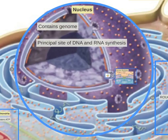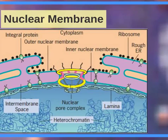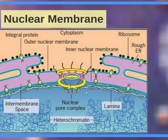The nucleus will have its own lectures associated with it, but right now it contains the genome and is the principal site of DNA and RNA synthesis. Its membrane is similar to the membrane of the cell — it has integral proteins, an outer and an inner layer, and much like the fatty acid tails, it has this space. It has nuclear pore complexes, which are the channels or holes that you would see in most pictures of a nucleus. The lamina, which is the scaffolding, is underneath it.